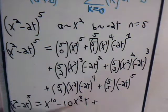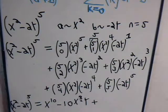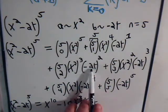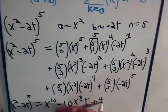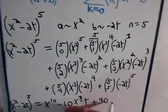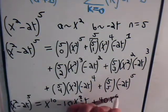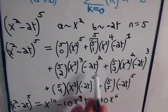Now we have this term here, plus, now that binomial coefficient of 5 over 2, that is equal to 10. And here we're going to have negative 2 squared, that's going to be plus 4. So this will give us plus 40 times x to the sixth times y squared.